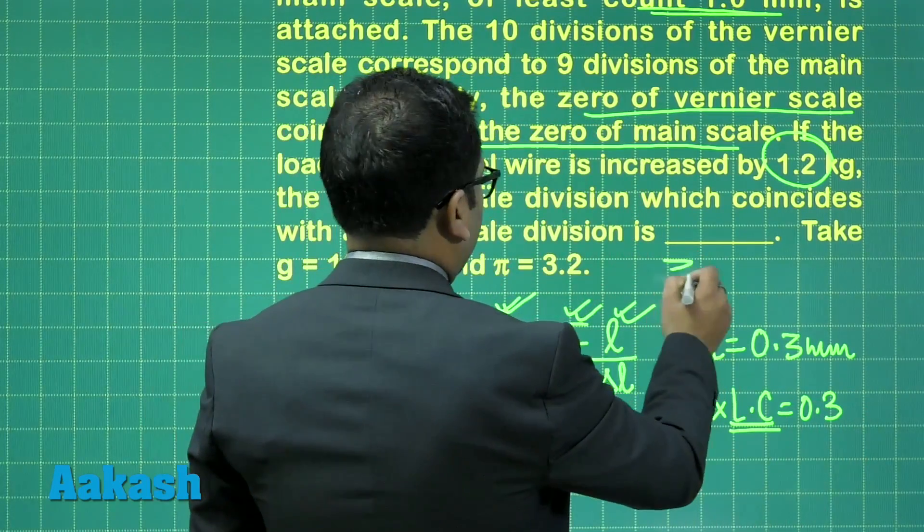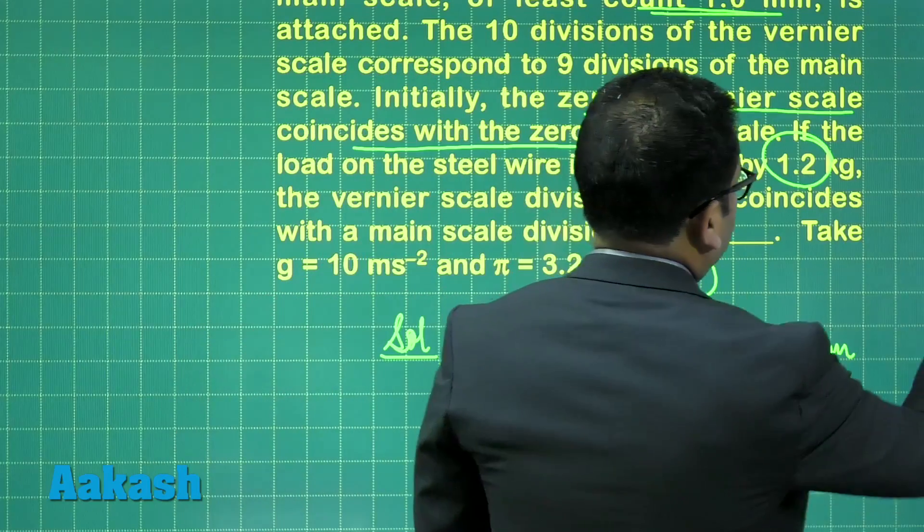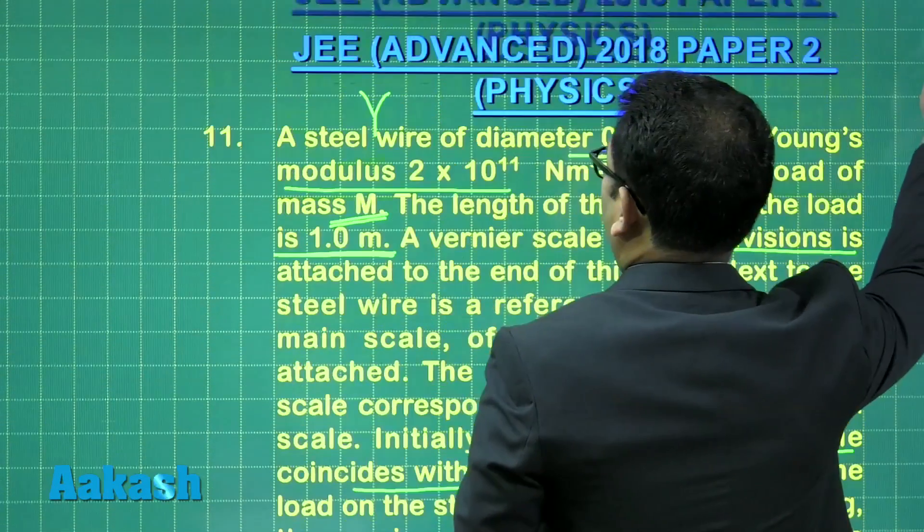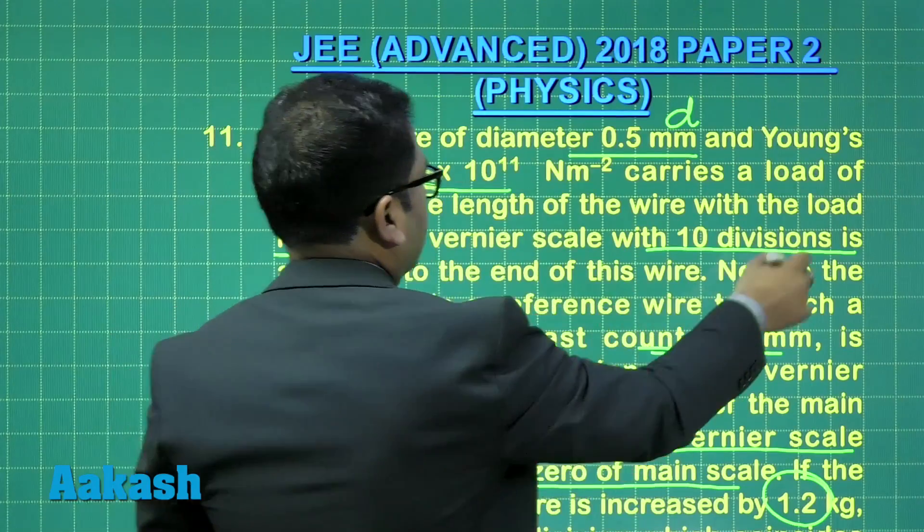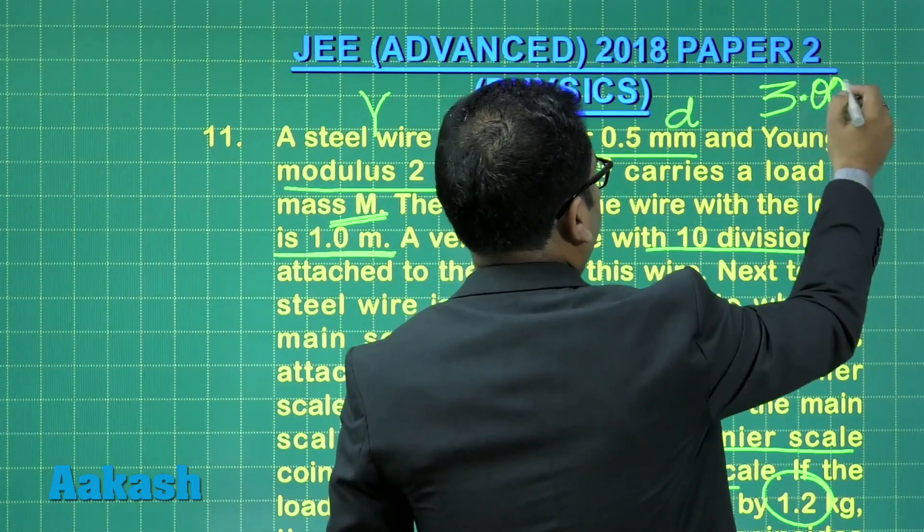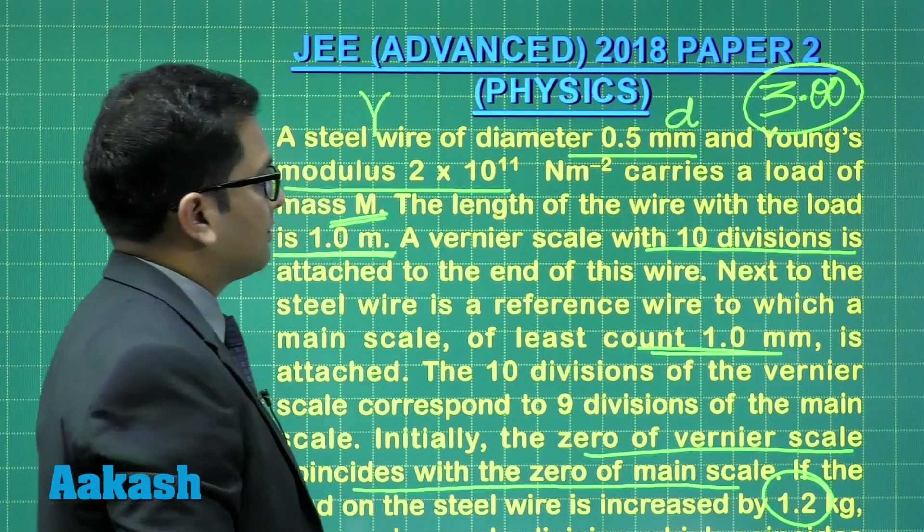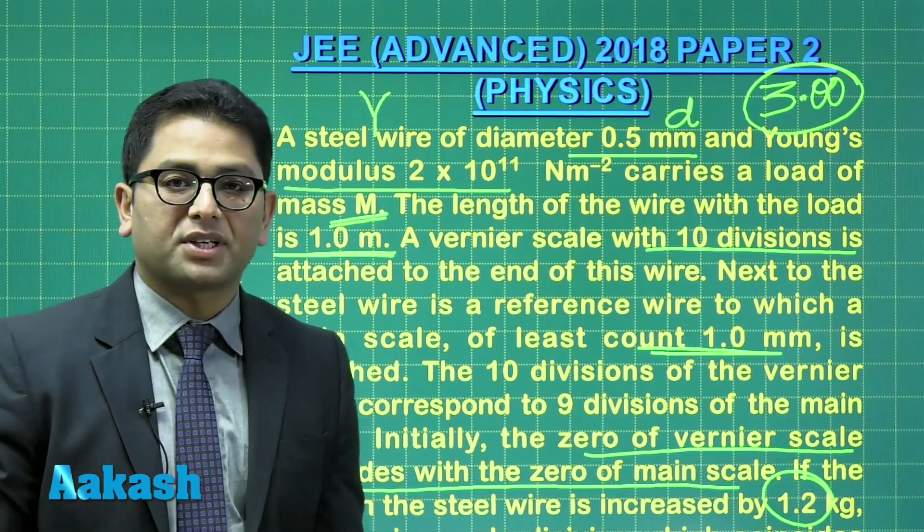So therefore, the value of n has to be equals to 3. So the correct answer for question number 11, I should not say option, but the correct answer would be 3, or more precisely 3.00. Let's move to question number 12.